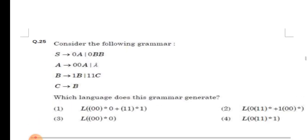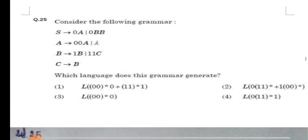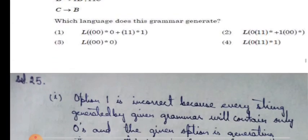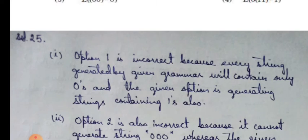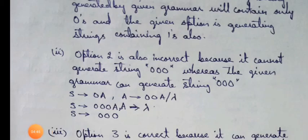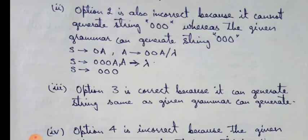In our next question, consider the following grammar. Which language does this grammar generate? So let's see the options. Option 1 is incorrect because every string generated by given grammar will contain only zeros and the given option is generating strings containing one also. Option 2 is also incorrect because it cannot generate string 000 whereas the given grammar in the question can generate string 000.